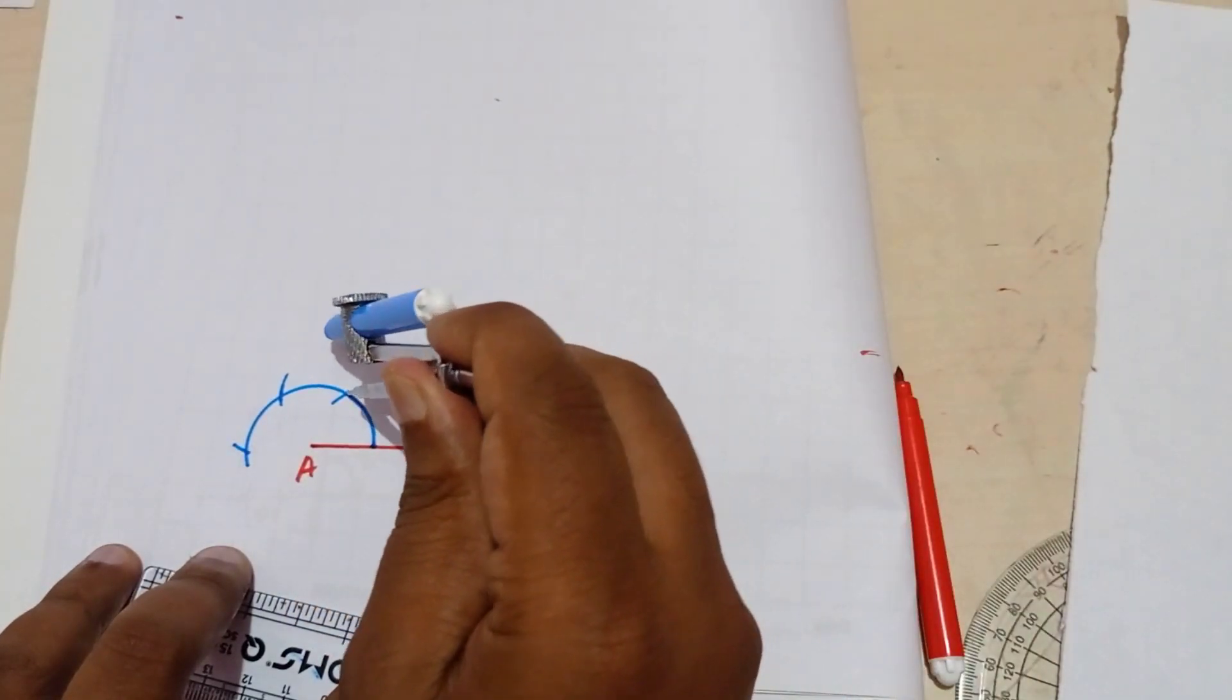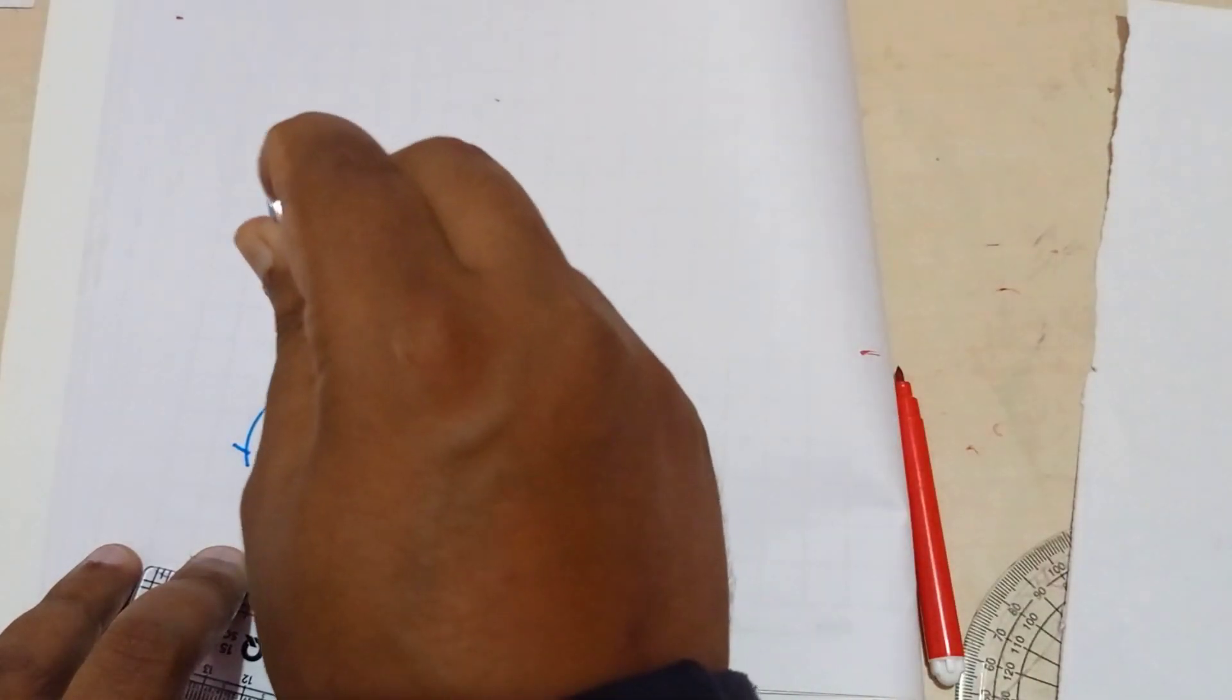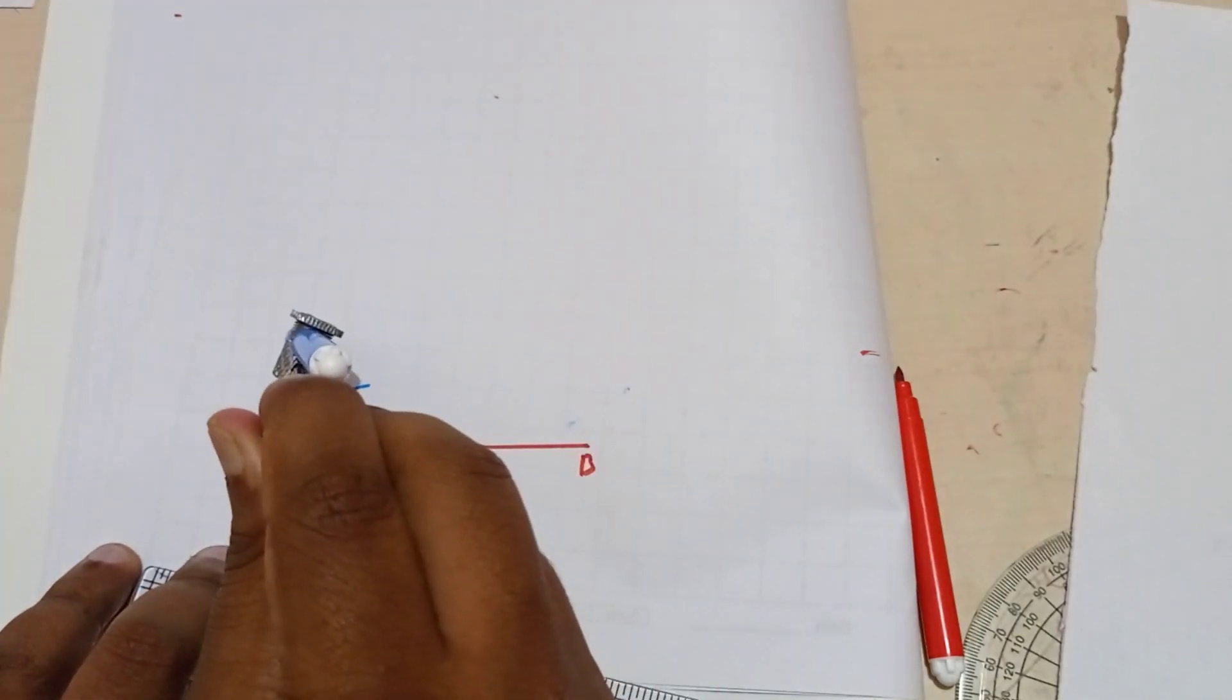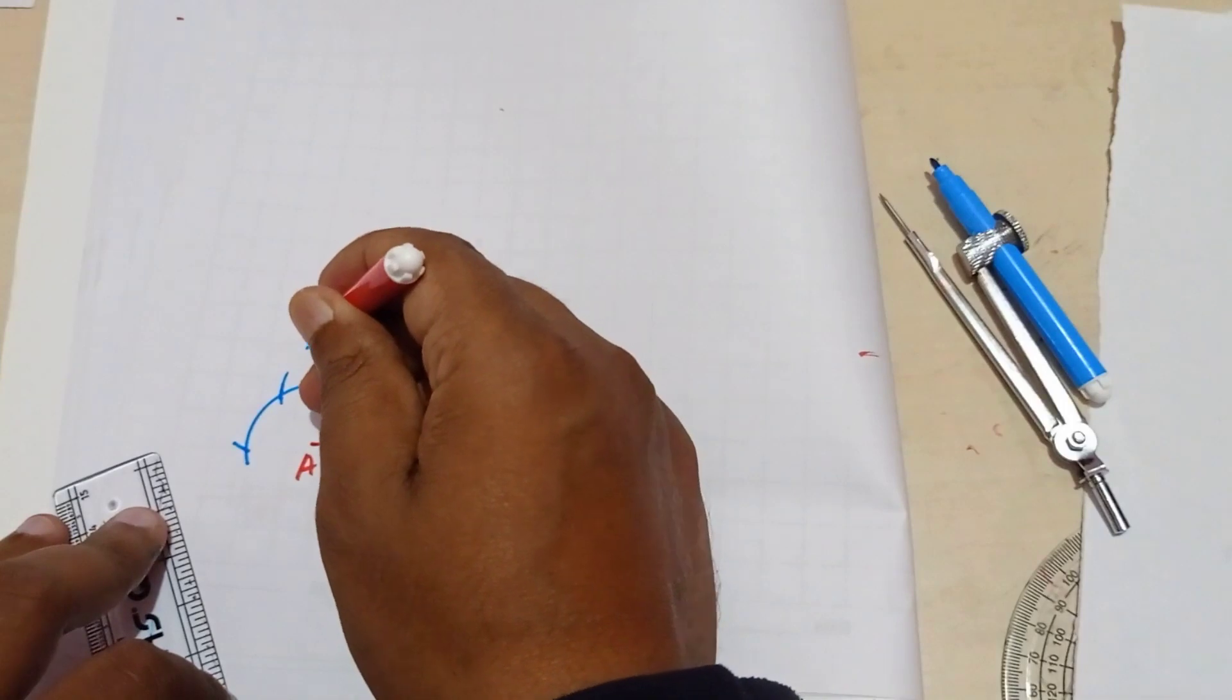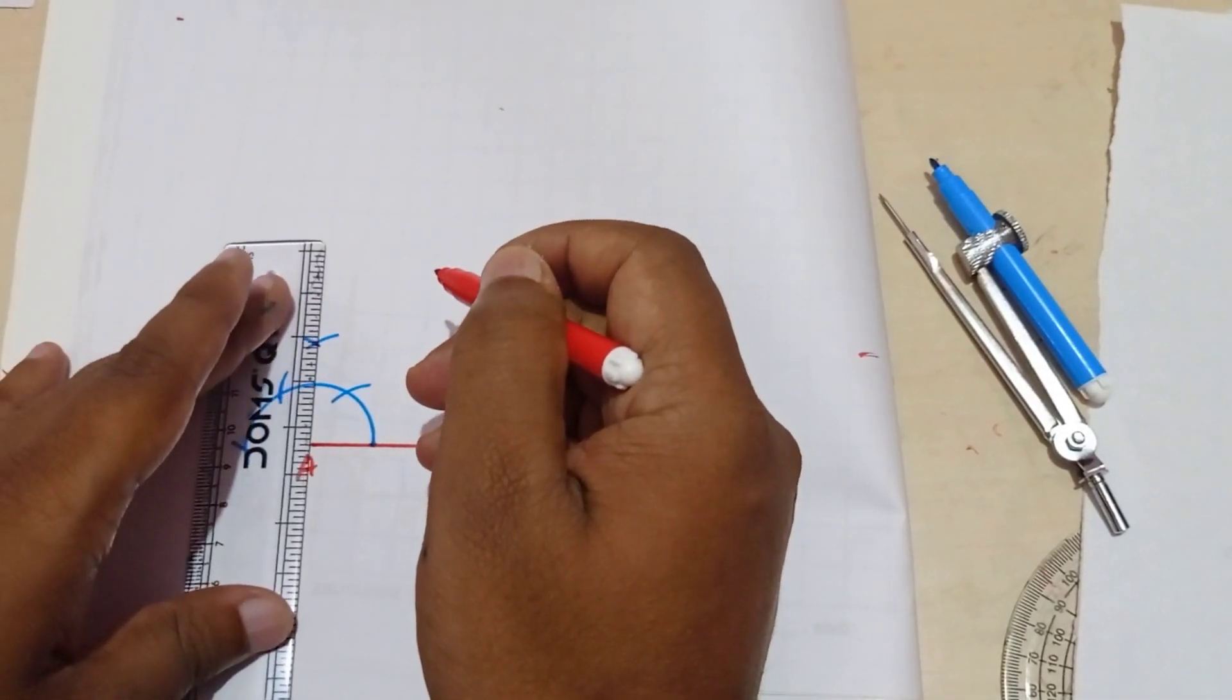So from this point, from this point, so one point we are getting here. So this point you join with this.